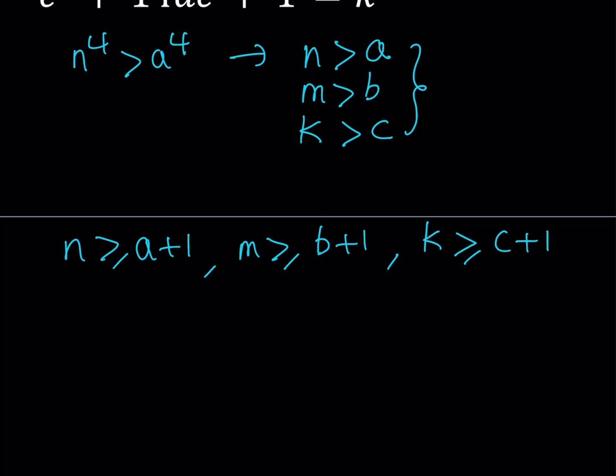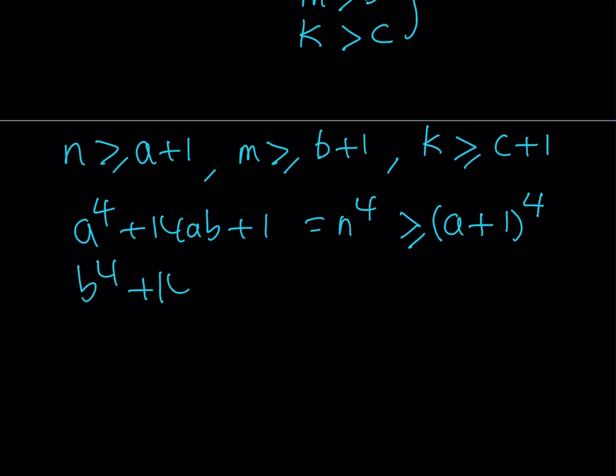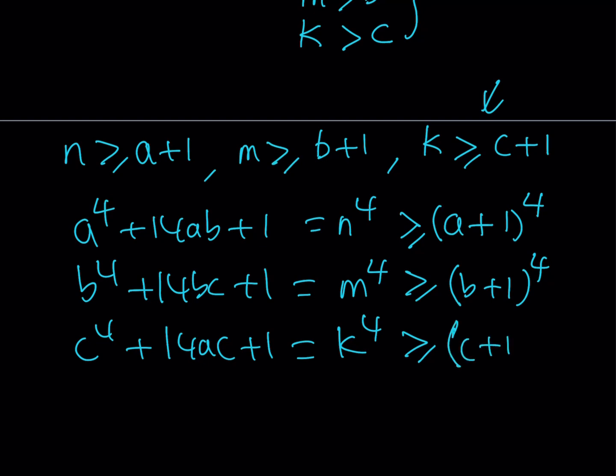Awesome. Now this is helpful, because if you raise both sides to the fourth power, you're going to get the following. So if you look at our first equation, it was a to the fourth plus 14ab plus one equals n to the fourth. And now we know that n is greater or equal to a plus one, therefore n to the fourth power is going to be greater than or equal to a plus one to the fourth power. And we can do the same thing for the second equation and the third equation. Therefore, k to the fourth power is just going to be greater than or equal to c plus one to the fourth power.